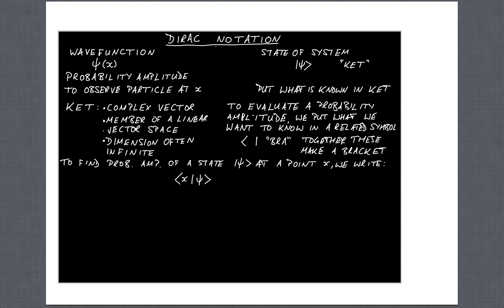So if, for instance, I wanted to find the probability amplitude of a state psi, that's ket psi, at a point x in space, then we would write bra x ket psi and this relates to our familiar wave function as psi of x.